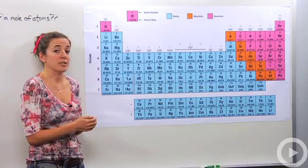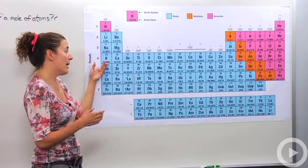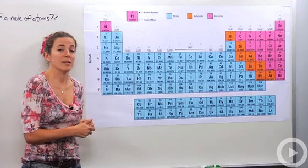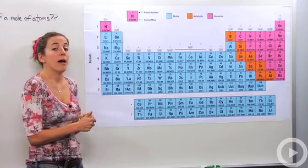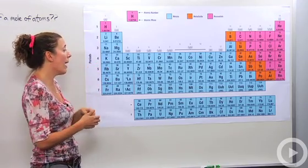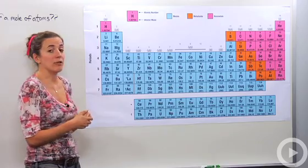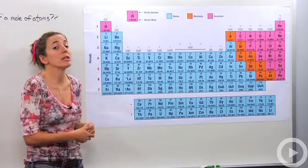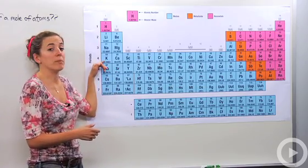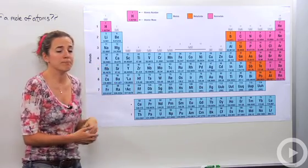Avogadro discovered that if you have a mole of that atom — meaning 6.02 times 10 to the 23rd particles of potassium — they actually weigh 39.0983 grams. So that number is extremely useful, and it's the mass of one mole of that particular substance, also known as the molar mass.